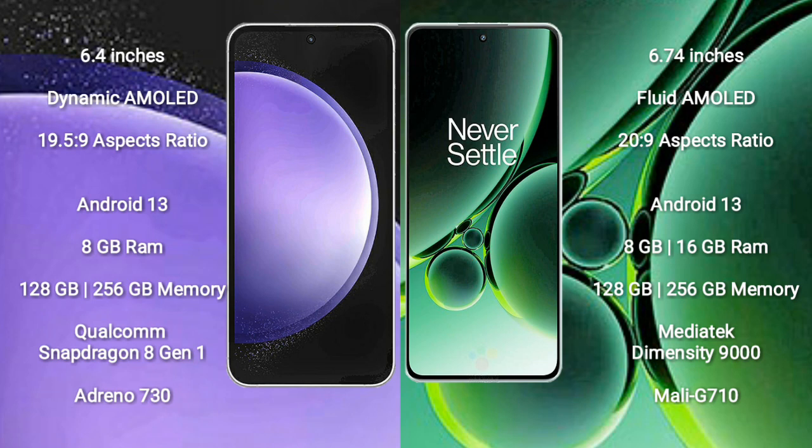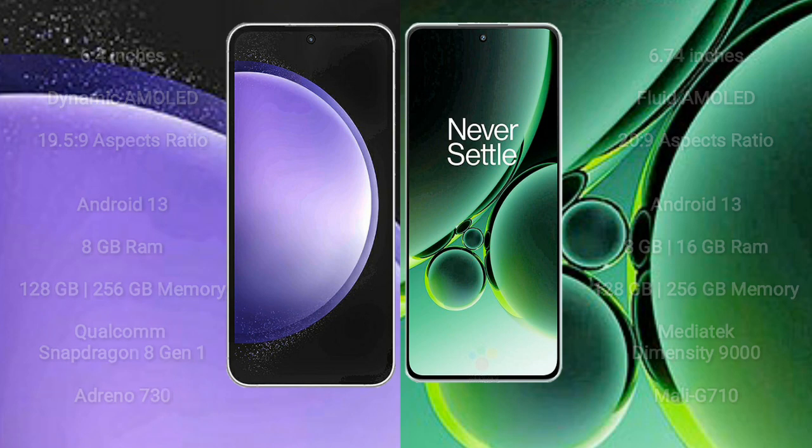Samsung Galaxy S23 FE features a Qualcomm Snapdragon 8 Gen processor and GPU Adreno 730. OnePlus Nord 3 comes with 8GB or 16GB RAM and 256GB or 512GB internal storage, with a MediaTek Dimensity 9000 processor and GPU Mali-G710.